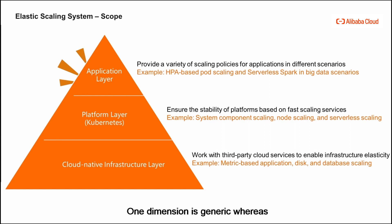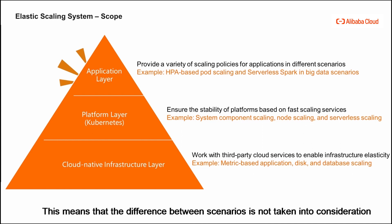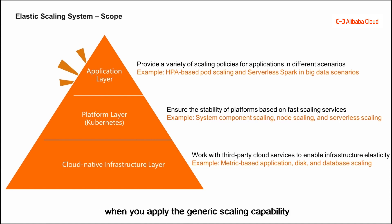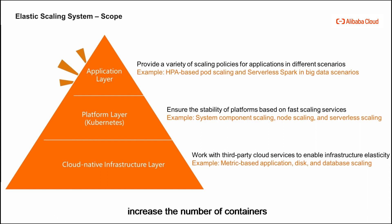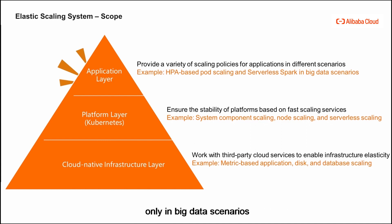One dimension is generic whereas the other dimension is much more industry-oriented. The goal of the generic dimension is to provide generic scaling capability, meaning the difference between scenarios is not taken into consideration. For example, you can upgrade the specifications of a single cluster or increase the number of containers. Industry-oriented scaling considers the difference between scenarios — for example, serverless Spark can be used to implement serverless scaling only in big data scenarios.